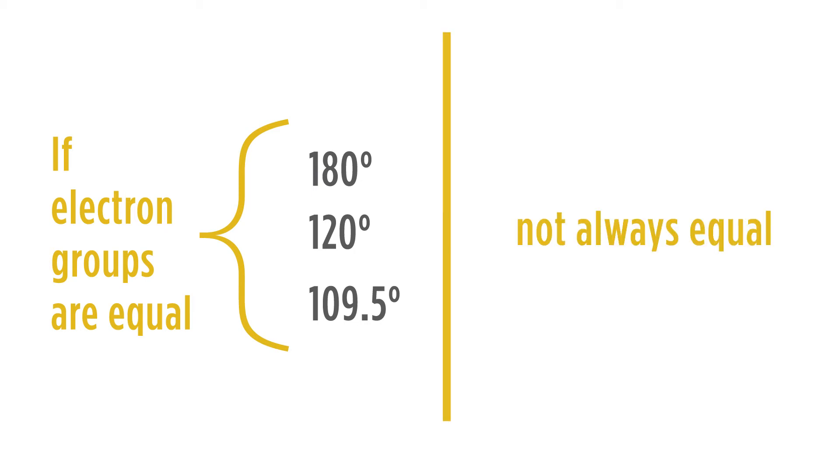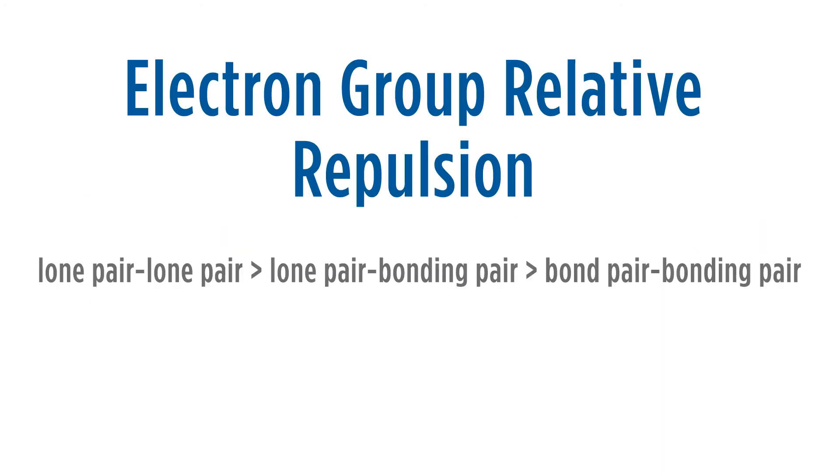Note that not all electron group interactions are equal. If we have a lone pair-lone pair, that repulsion is going to be greater than a lone pair-bonding pair, and that repulsion will be greater than a bond pair-bonding pair. We often show this abbreviation as LP to LP interactions, LP to BP interactions, and BP to BP interactions.